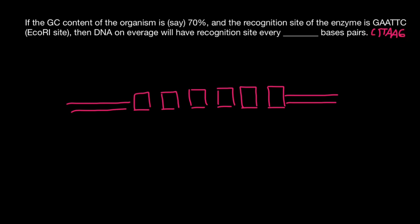And we see that the sequence is going to be the same: G, A, A, T, T, C. So we call this a palindromic sequence. This is going to be important for our calculations, and I will explain why later.